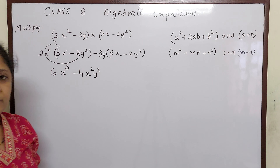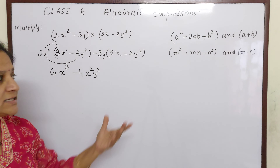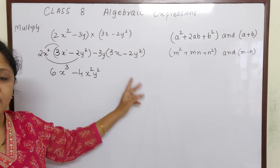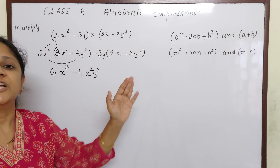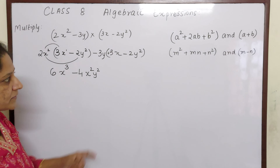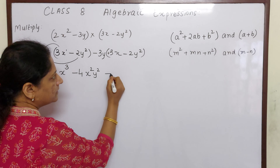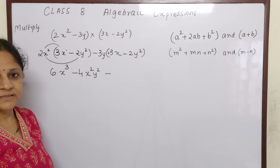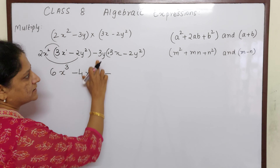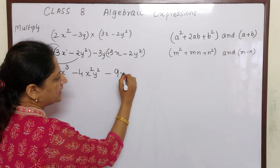Till now, whatever sums we did, outside the bracket a plus sign was there, so the signs inside the bracket would not change. But here, when I am writing the answer, the sign inside the bracket will change. Because now, here it is plus — but minus into plus is minus, so this plus has become minus. The sign changes if outside the bracket there is a minus. 3 × 3 = 9, x into y gives xy.